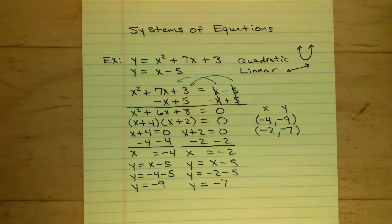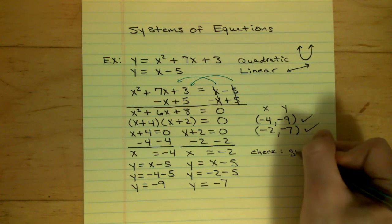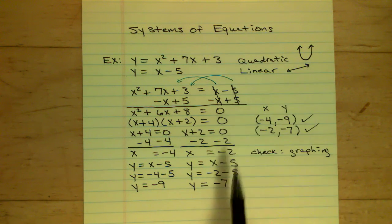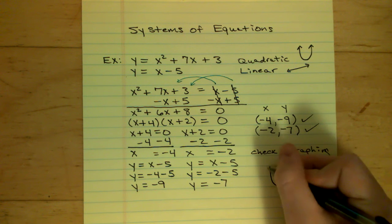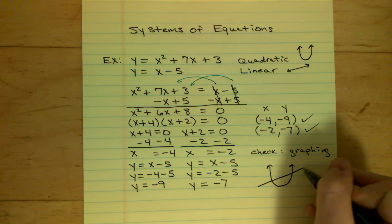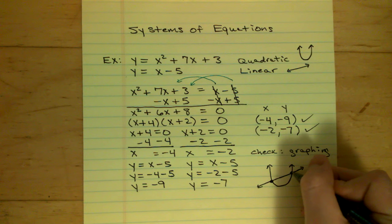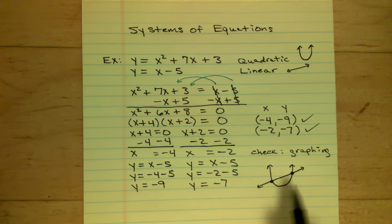So now I've got my two ordered pairs — these are going to be my answers. And if I want to check them, I can check by graphing. The top equation is quadratic, so you get a U-shape parabola, and the bottom equation is linear, so you get a line going through it. The line crosses the U-shape twice, and those intersection points are the solutions: negative 4, negative 9 and negative 2, negative 7. That's how you solve a system of equations.